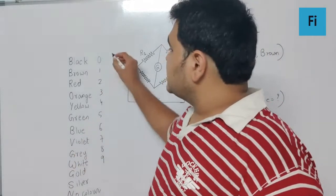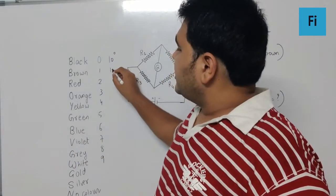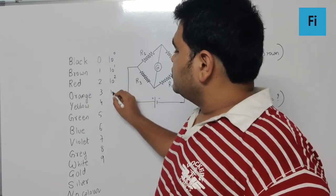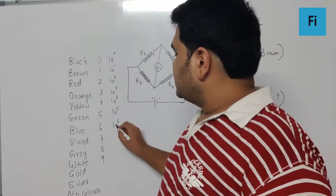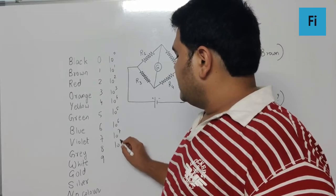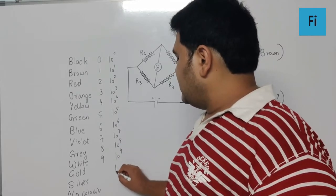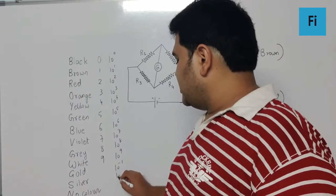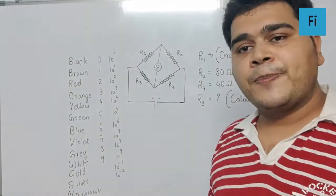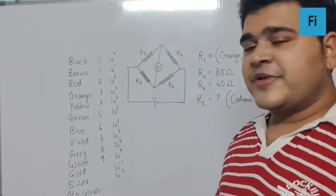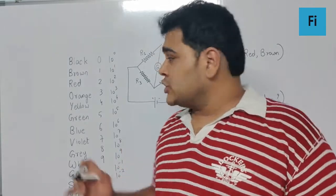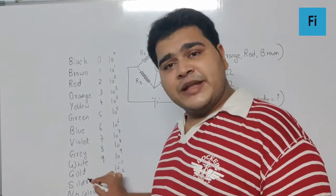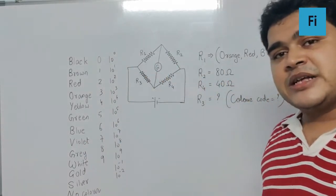And the multiplier also is the same: 10 raised to 0, 10 raised to 1, 10 raised to 2, 10 raised to 3, 10 raised to 4, 5, 6, 7, 8, 9. This is 10 raised to minus 1, and this is 10 raised to minus 2. So these are the powers of 10, the multipliers which are used for generally third band. The numbers are used for the first and second band, and the multipliers are used for third band.